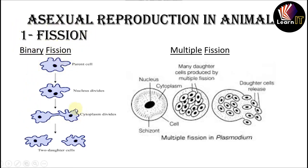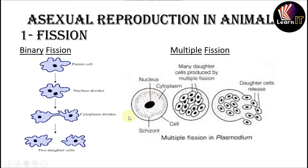Let us start from animals. The first topic is fission. Fission is the division of a parent body into two or more daughter individuals identical to the parents. Fission is of two types. Binary fission — 'bi' means two — is the division of the parent cell into two small, nearly equal-sized daughter individuals, each of which rapidly grows into an adult. For example, binary fission happens in amoeba and paramecium.